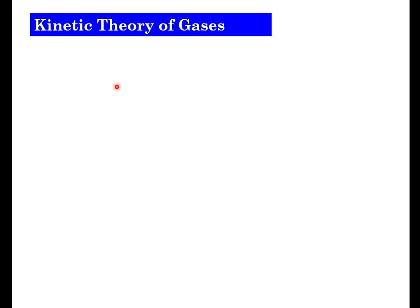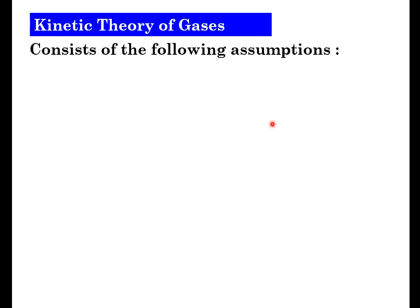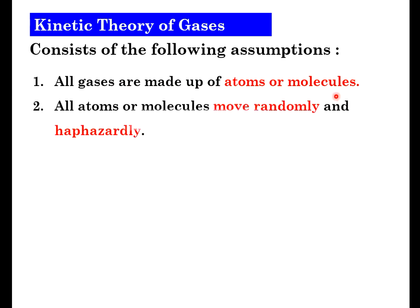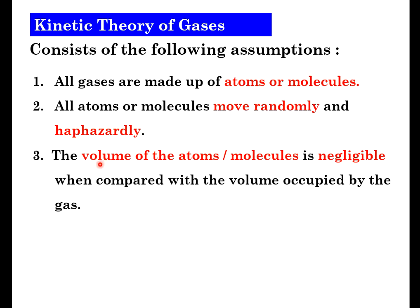Before we start, the kinetic theory of gases consists of the following assumptions. First, all gases are made up of atoms or molecules. Second, all atoms or molecules move randomly and haphazardly, because they are gases - they move randomly. Third, the volume of the atom or molecule is negligible compared to the volume occupied by the gas. If this dot of my pointer is the volume of the atom, and the white screen is the container, the whole entire container's volume is more significant compared to the volume of the small atom.